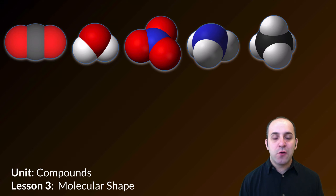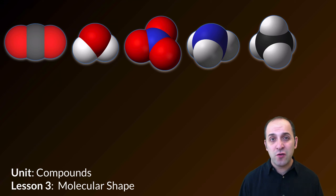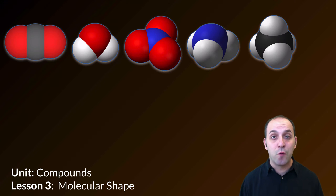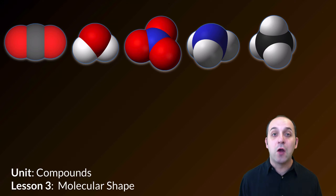Hi, and welcome to Lesson 3 here in our Compounds Unit. Here we're going to talk about molecular shape. In Lesson 2 we talked about how to draw structures, but now that we know how to do that, we have to understand the kinds of things that we're actually representing. Up here I've got examples of the major shapes that you're responsible for in our course. Let's go in and talk about what these shapes are, how we describe them, and how to represent them.